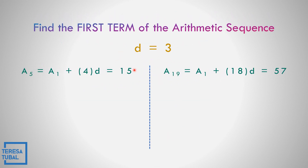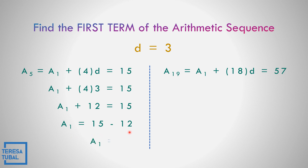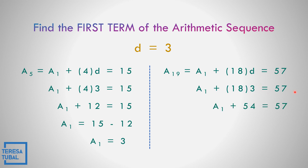Substitute d equals 3 into equation 1: a sub 1 plus 4 times 3 equals 15, so a sub 1 plus 12 equals 15, giving a sub 1 equals 3. Checking with equation 2: a sub 1 plus 18 times 3 equals 57, so a sub 1 plus 54 equals 57, giving a sub 1 equals 3. We get the same answer either way, so the first term is positive 3.